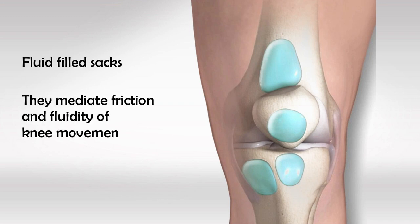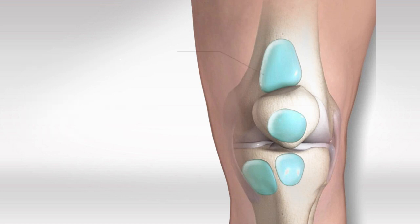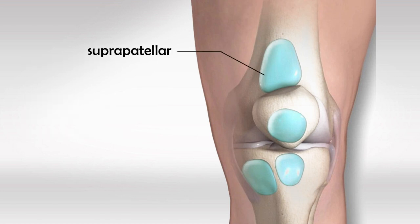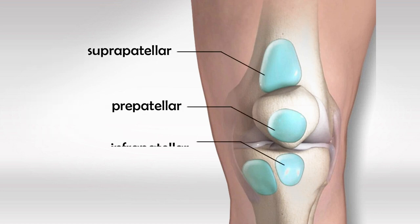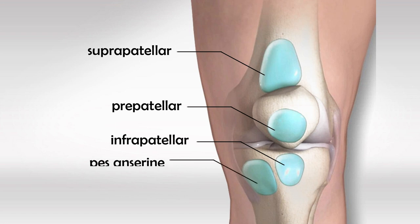They help mediate friction and work like a cushion to absorb pressure. Around the patella we have the supra, pre, and infrapatellar bursa, and medially we have the semimembranosus and the pes anserine bursa.